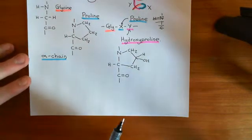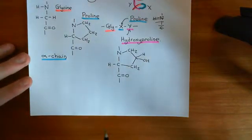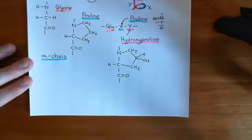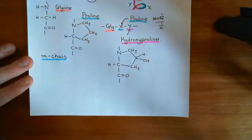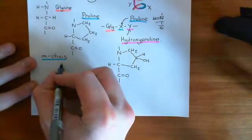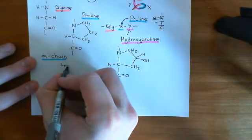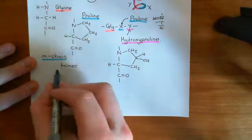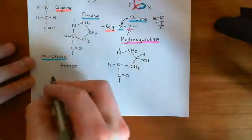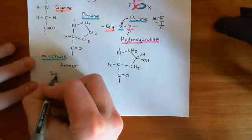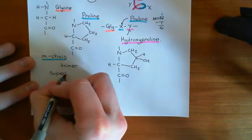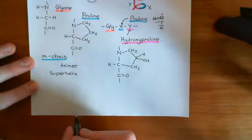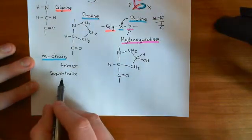The individual polypeptides that are going to make collagen molecules are called the alpha chains. These alpha chains are now going to assemble into trimers. You're going to bring together three of these alpha chains and assemble them into a larger structure, and this is going to be what's known as a super helix. So you combine three alpha helices together to make what's known as a super helix.